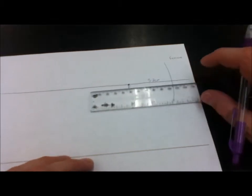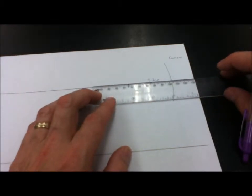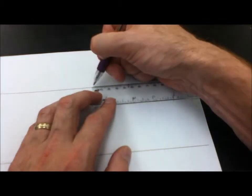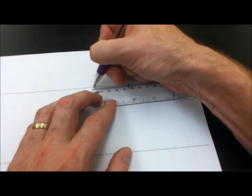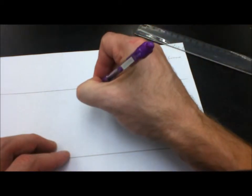So now we have to measure out 10.4 centimeters from the vertex, which is approximately right here. And we mark that point C.